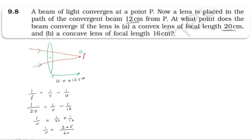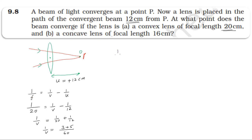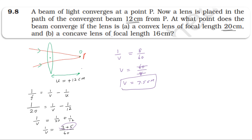So 1/v = 3/60 + 5/60 = 8/60, which gives v equal to 7.5 cm. So the image in the convex lens case is formed at 7.5 cm from the lens.